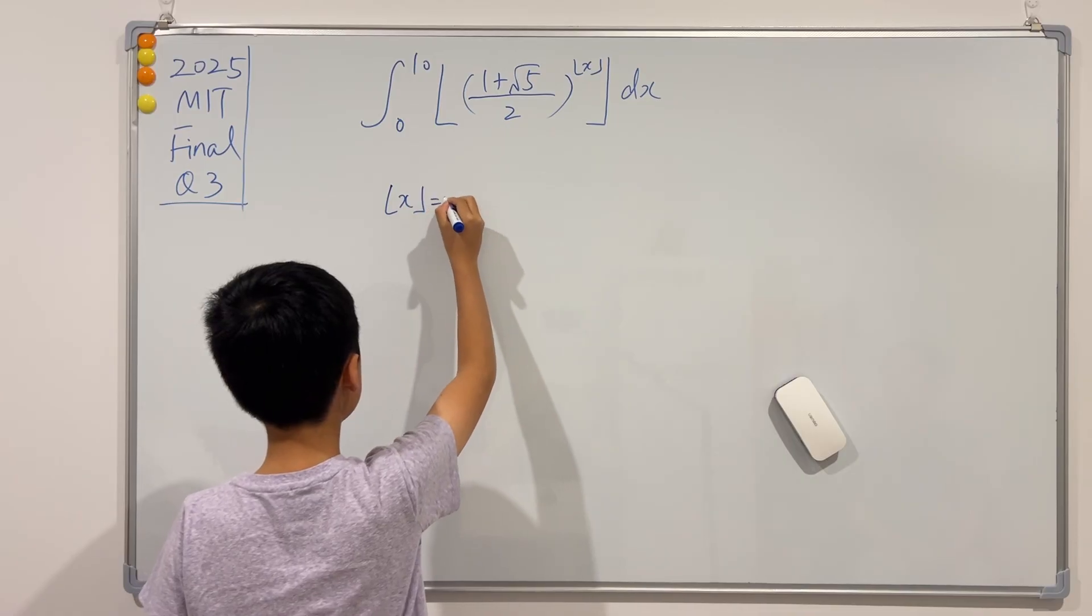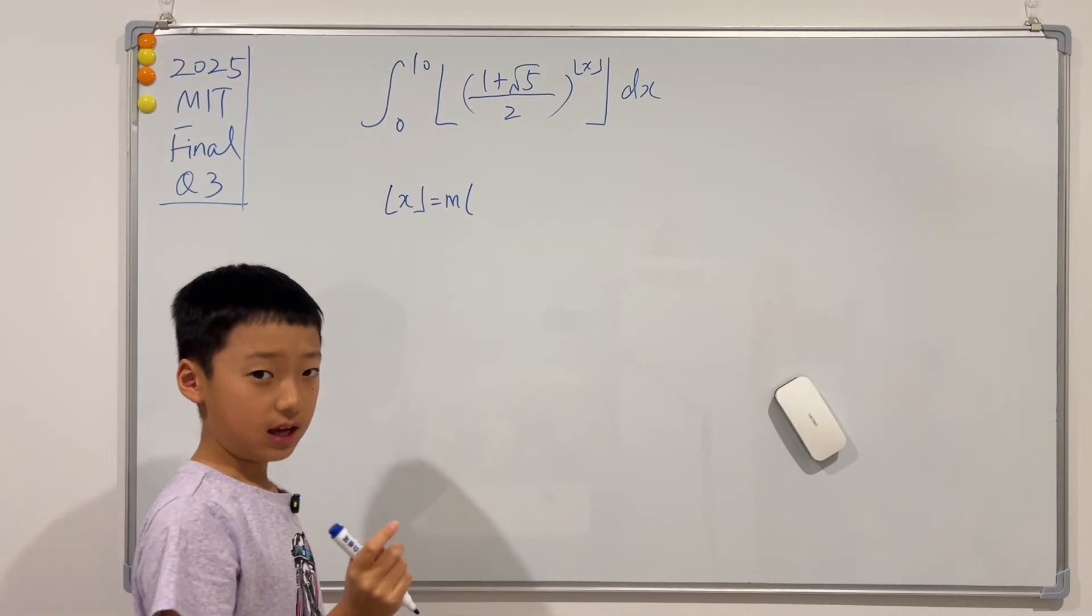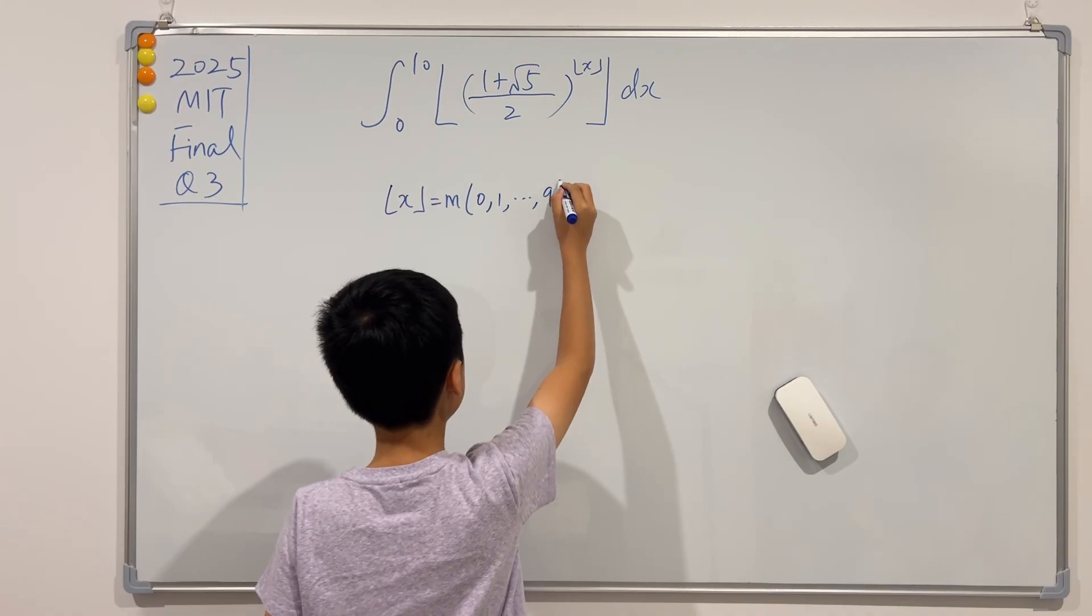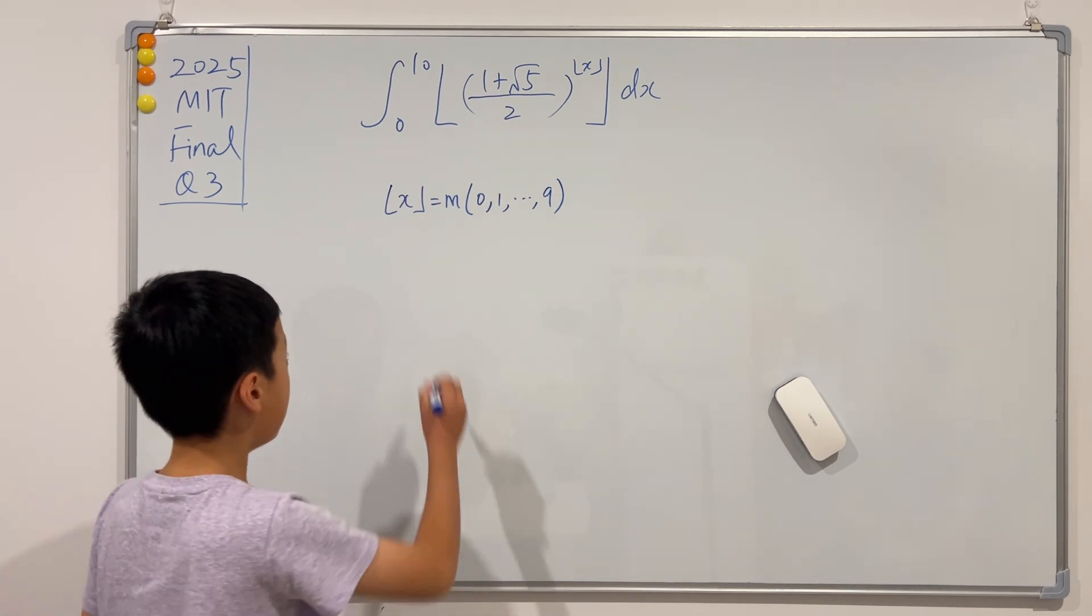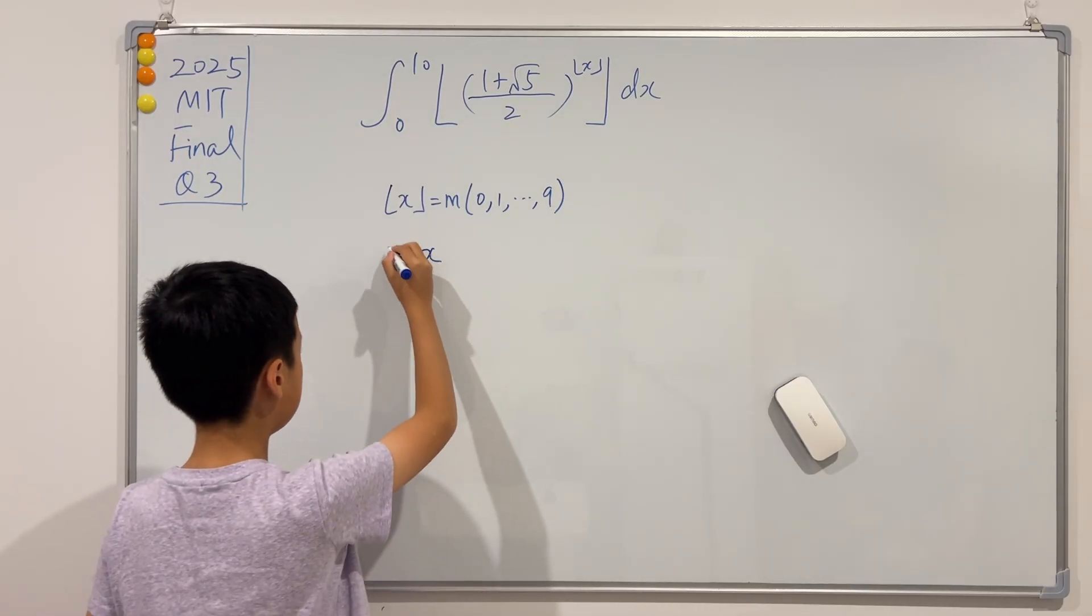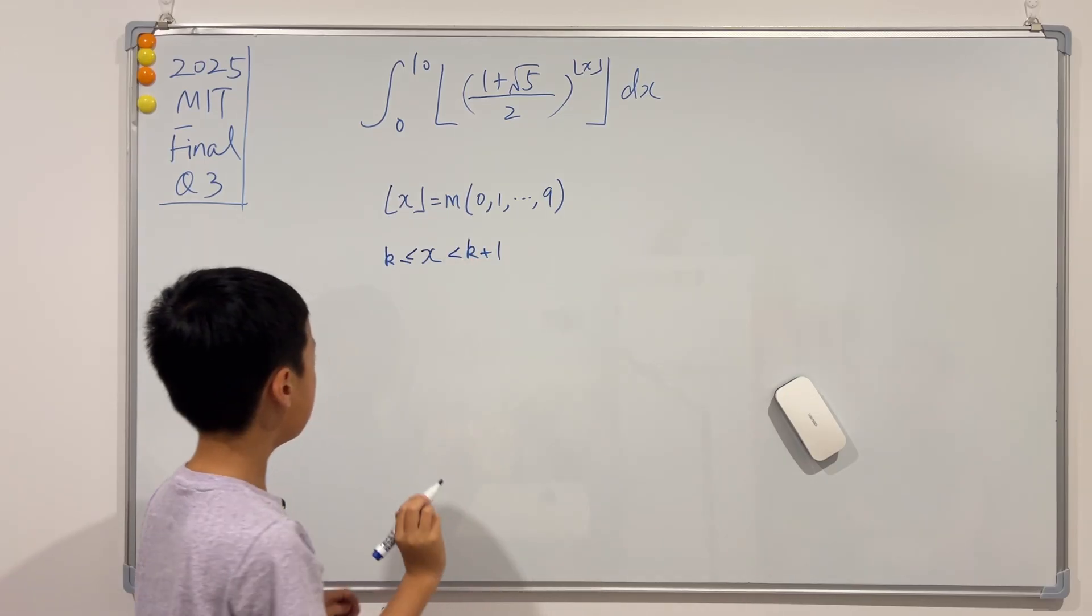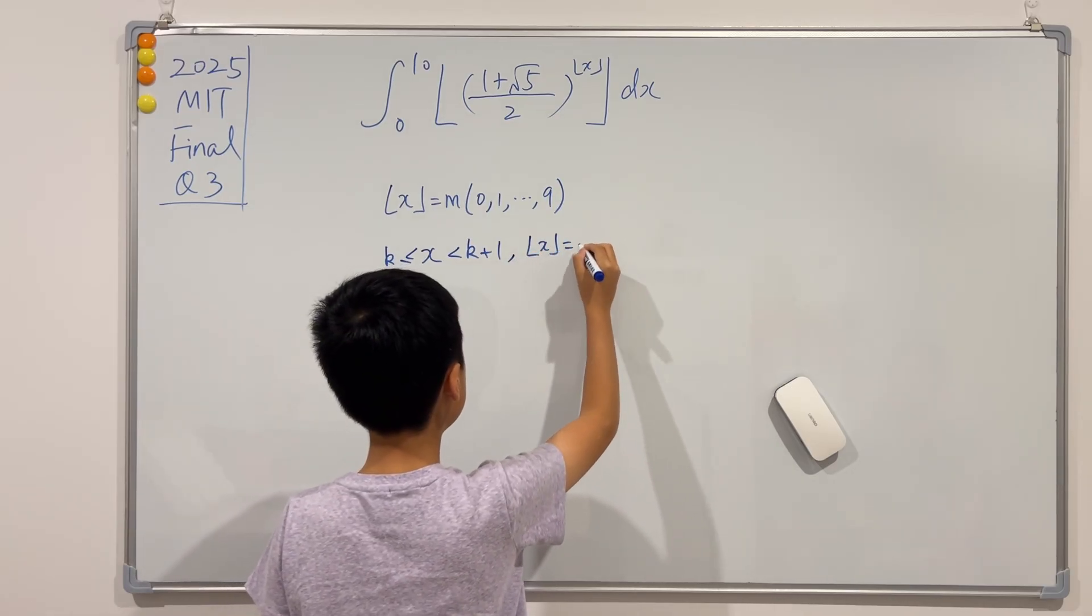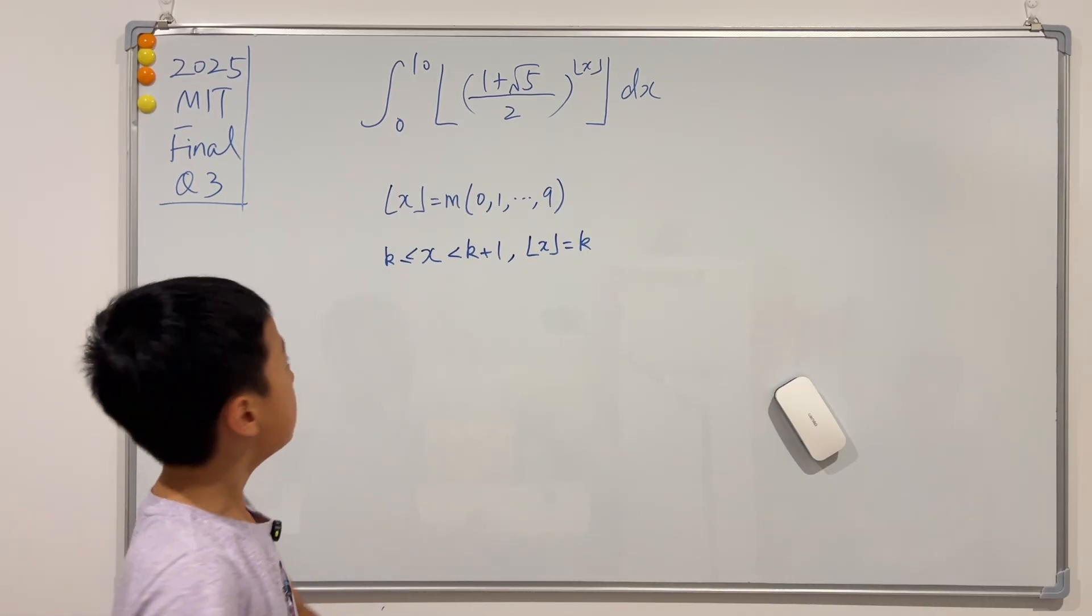If you watched my previous video, you know that the floor function of x in this case will equal an integer m ranging from 0 to 9. Also, you see that x, or the inside of the floor function, will be greater than or equal to k and less than k plus one, and if this is true, then the floor of x is equal to k.